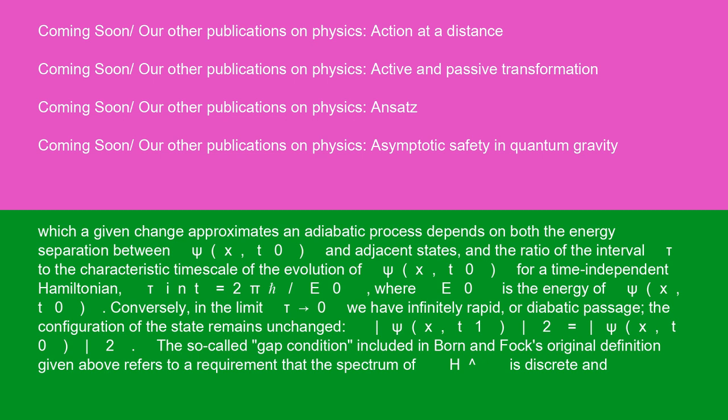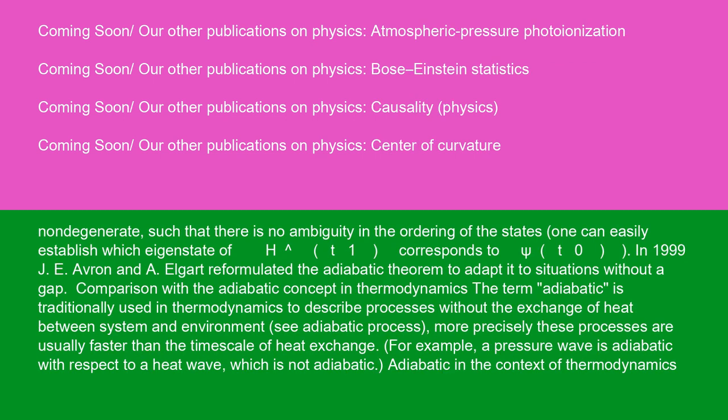Conversely, in the limit tau approaching 0, we have infinitely rapid, or diabatic, passage. The configuration of the state remains unchanged: |psi(x, T1)|² equals |psi(x, T0)|². The so-called gap condition, included in Born and Fock's original definition, refers to a requirement that the spectrum of H-hat is discrete and non-degenerate, such that there is no ambiguity in the ordering of the states.